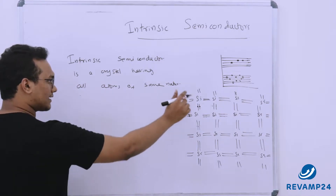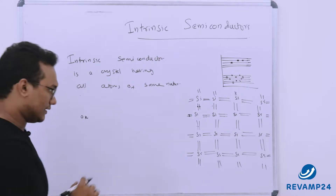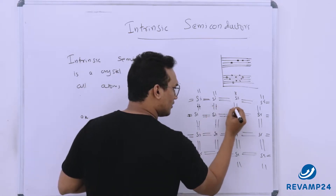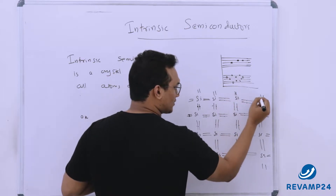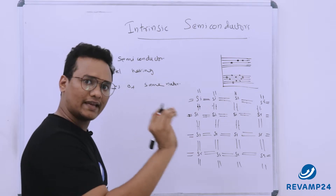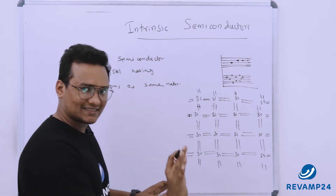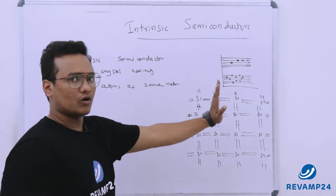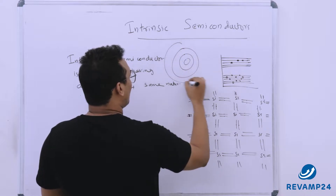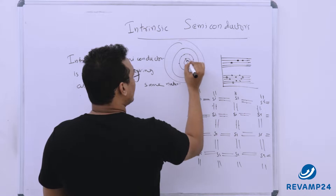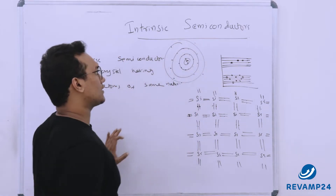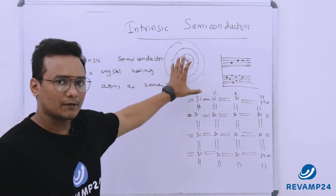First we will see the crystal at zero Kelvin. At zero Kelvin, none of the electrons would be free electrons. All the electrons would be in a shared or bonded condition. All the valence electrons — the electrons in the inner orbit would be revolving. Silicon has configuration 2, 8, 8, 4. I am only going to talk about the 4 valence electrons, which are the electrons that participate in bonding.